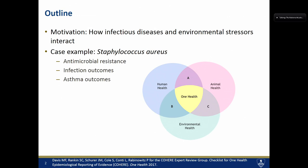Microbiologists try not to have favorites, but I do have a favorite bacterium, and this is Staphylococcus aureus, which is a gram-positive colonizing opportunistic pathogen. Under the motivation of how infectious diseases and environmental stressors interact, I want to give this case example with a couple of different variations. I'm doing all of this within a One Health framework, as Laura so beautifully set up for us this morning.